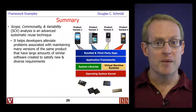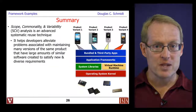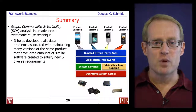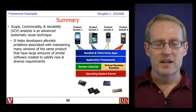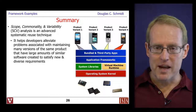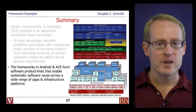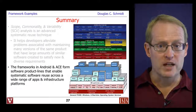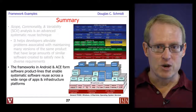So to wrap up this section: scope, commonality, and variability analysis is an advanced technique for ensuring systematic software reuse. This method helps developers alleviate problems that arise when maintaining lots of different versions of the same product, especially when these products have large amounts of similar software that was often created in an ad hoc way to satisfy new and diverse requirements. Scope, commonality, and variability analysis helps you refactor that commonality to make it cleaner and easier to maintain. The frameworks provided in ACE and Android form software product lines that enable this systematic software reuse across a wide range of different apps, infrastructure environments, and platforms.